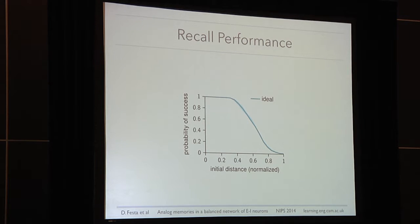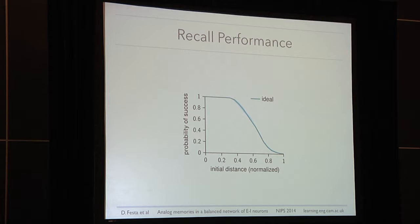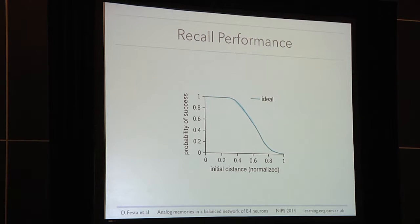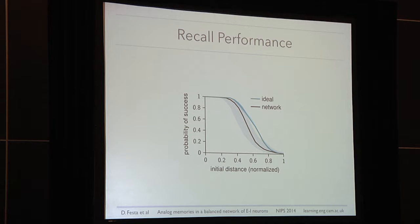We trained 30 memories in a system of 100 excitatory and 50 inhibitory neurons and measured performance against an ideal observer. We cue the system with a noisy version of the attractor we want to recall, with noise expressed in terms of distance — where distance one corresponds to two randomly sampled vectors from the distribution. The ideal observer has perfect knowledge of all attractors and always selects the memory closest to the initial cue. Its errors arise only because heavy noise can make the cue more similar to a different memory than intended. By comparison, our network's performance is comparable to that of the ideal observer.